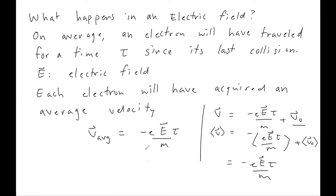I've now written down the average velocity of a set of electrons in an electric field E, expressed in terms of the collision time tau. Looking back at our equation for j, which is minus nev, if I use the average velocity calculated in the Drude model, I can see that the current density j equals n e² E τ over m.